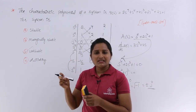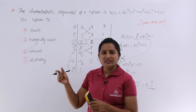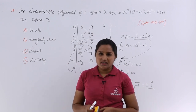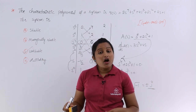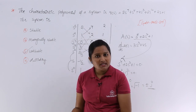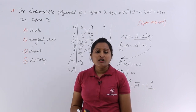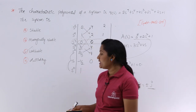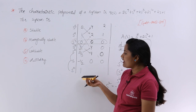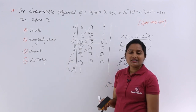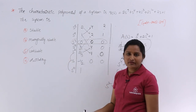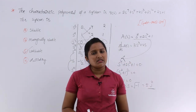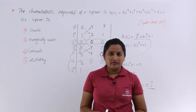Therefore, the system given by this characteristic equation is an unstable system, with two poles in the right half of the s-plane making it unstable.